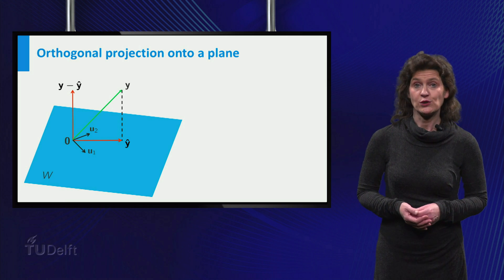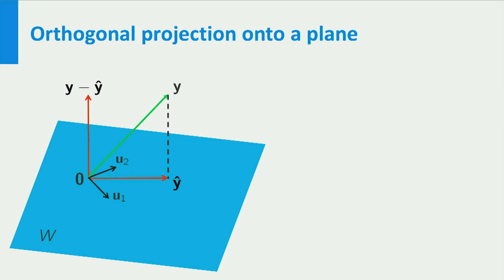Now it's time to combine your knowledge of orthogonality with your knowledge of basis. If Y minus ŷ is orthogonal to W, it means that it is orthogonal to both u1 and u2.